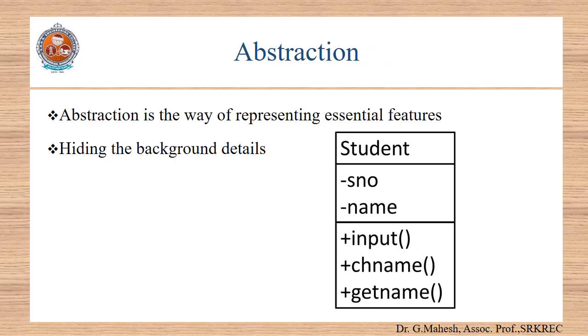Let us see what is meant by Abstraction. Abstraction is the way of representing essential features and hiding the background details. It shows the necessary information without showing the background details. Abstraction may be in different levels, starting with a variable in programming language to class in OOP.